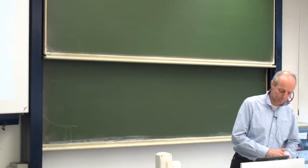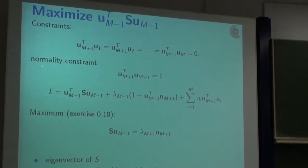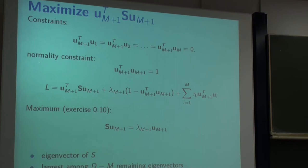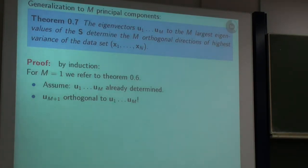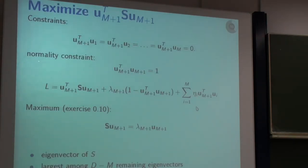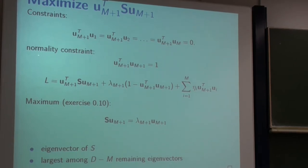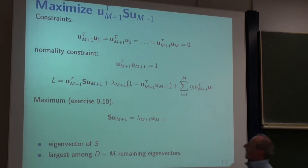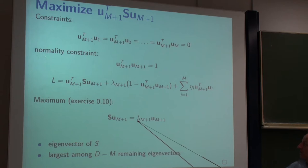Back to PCA again. So maybe we go back to the formula. What we first do is we calculate the covariance matrix. And then we have to solve this eigenvalue equation for the covariance matrix S. Then we get the eigenvalues lambda M.